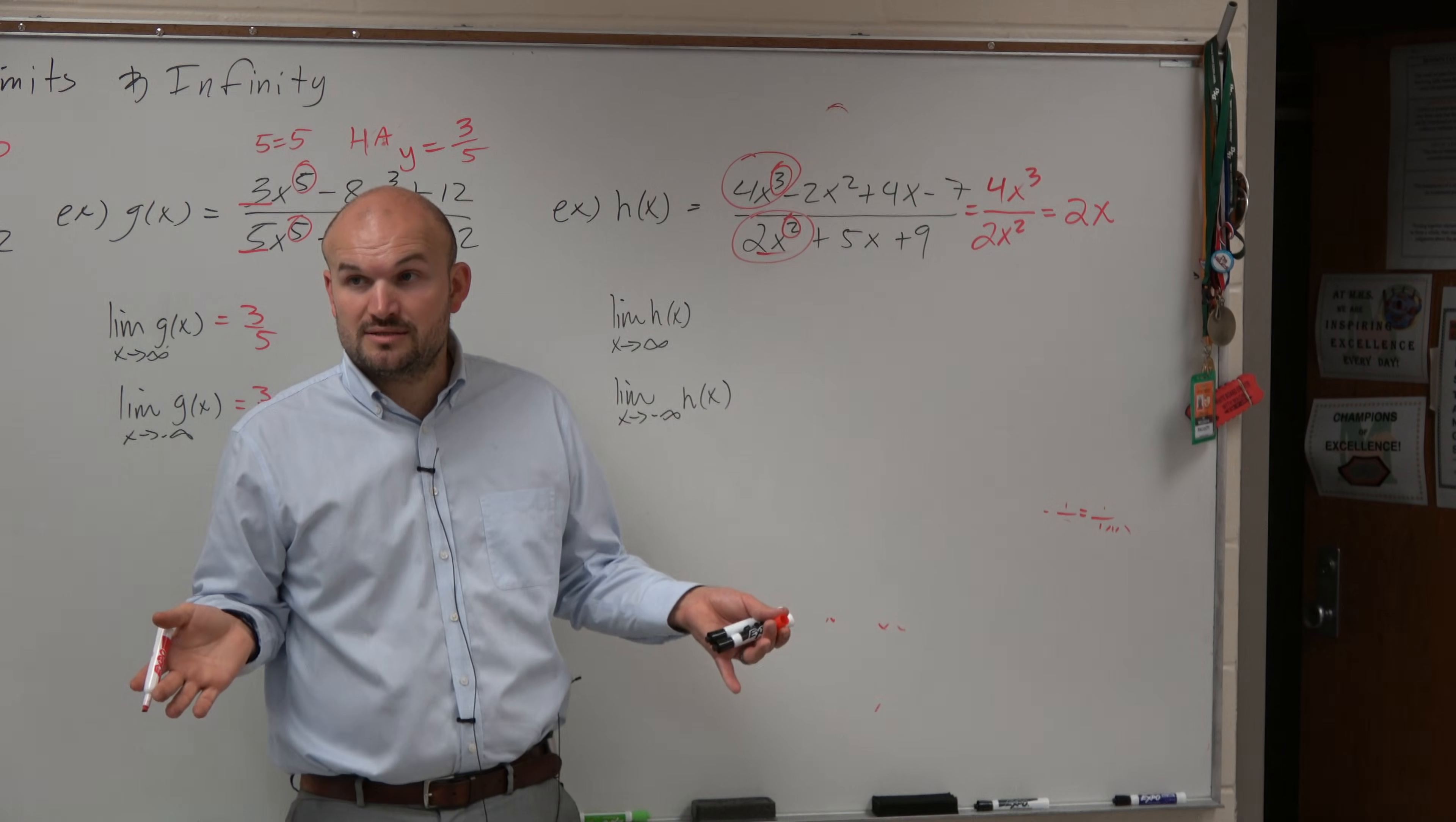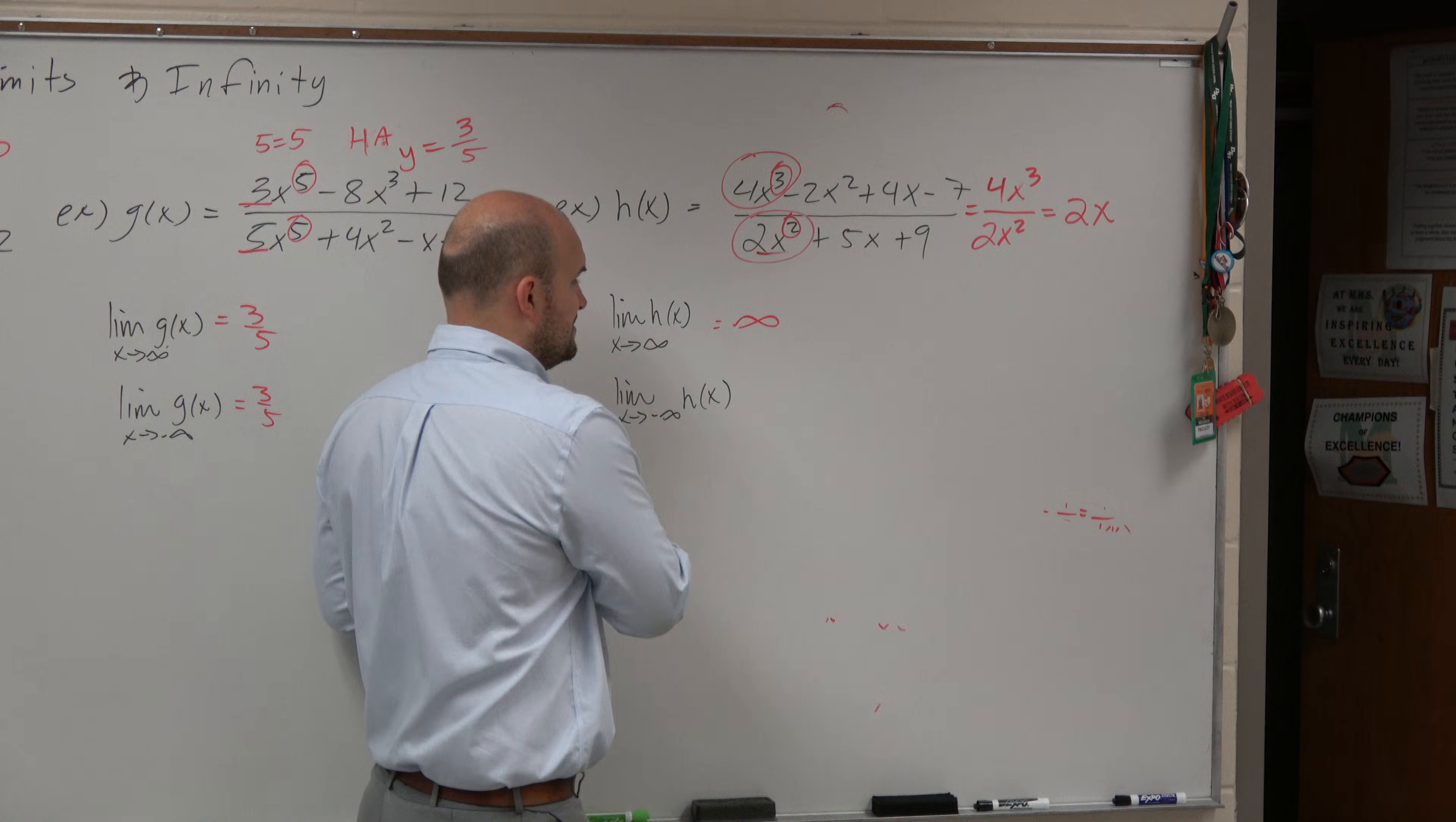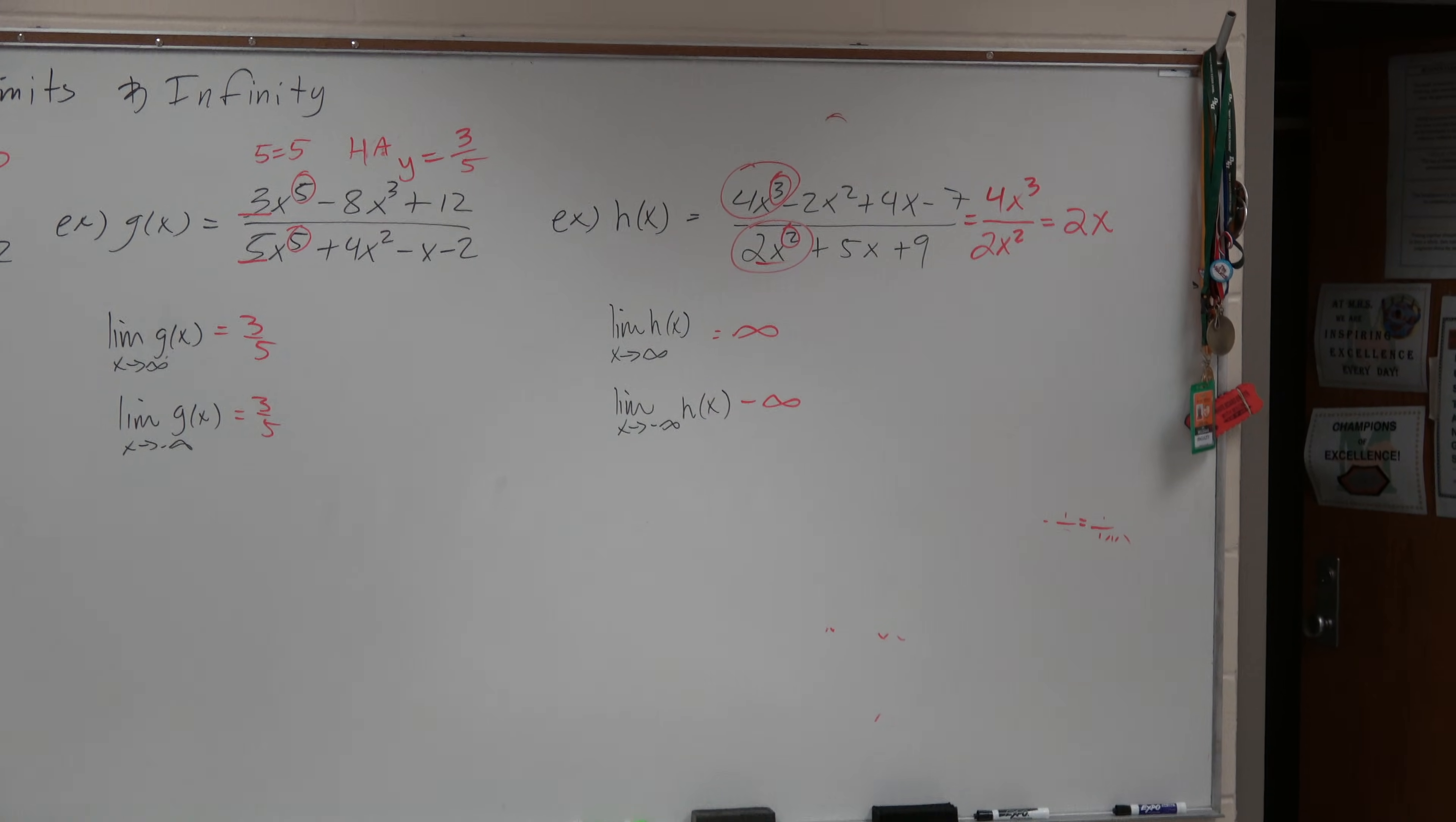do we know what the end behavior is for 2x? As it goes to infinity, the graph is going to go up. So, it's going to infinity. As it's going to the left, it's going to negative infinity. So, that is the boiled down, non-mathematical, this is why...